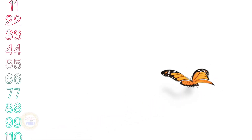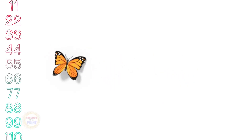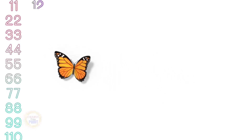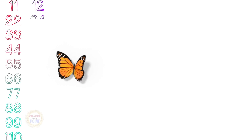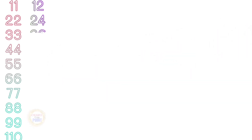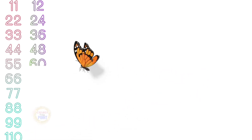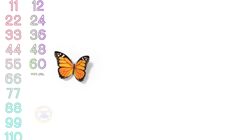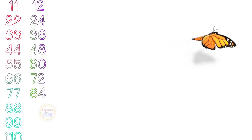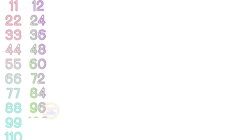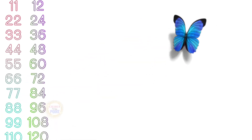11×10=110. Table of 12: 12×1=12, 12×2=24, 12×3=36, 12×4=48, 12×5=60, 12×6=72, 12×7=84, 12×8=96, 12×9=108, 12×10=120.